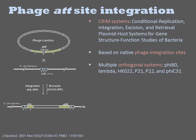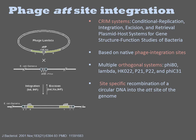There are at least six of these systems. The common ones are Phi-80, Lambda, HK022, P21, P22, and Phi-C31. In each case, there is a specific att sequence in the genome that undergoes recombination with the att-P sequence. Different phages use different att sequences, and each encodes its own sequence-specific integrase.